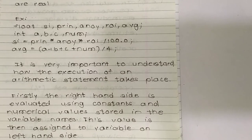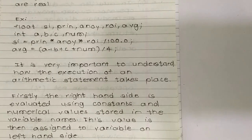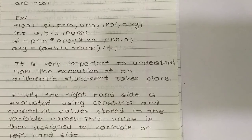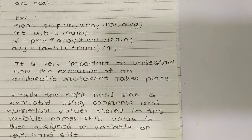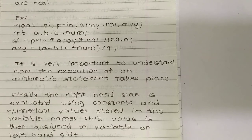It is very important to understand how execution of an arithmetic statement takes place. Firstly, the right-hand side is evaluated using constants and numerical values stored in the variable names. This value is then assigned to the variable on the left-hand side. So first, execution is performed on the right-hand side, and then it is assigned to the left-hand side.